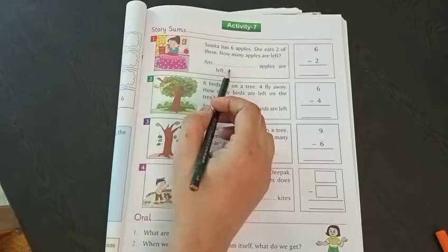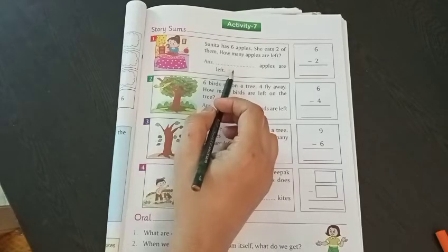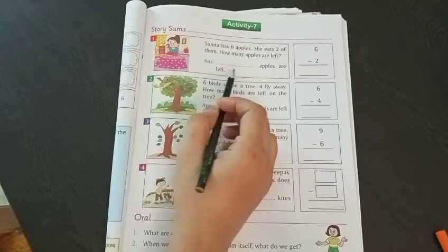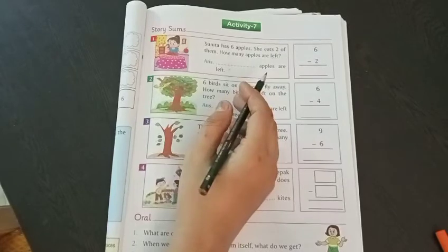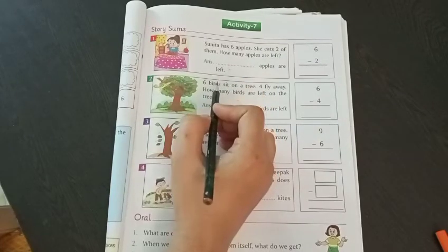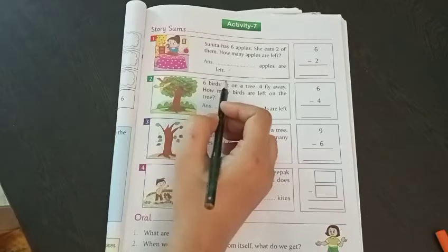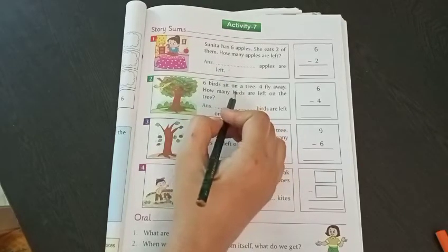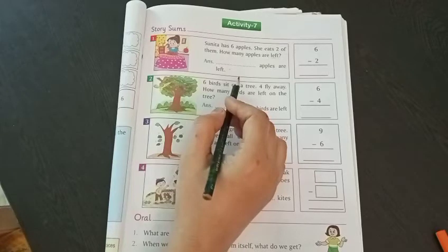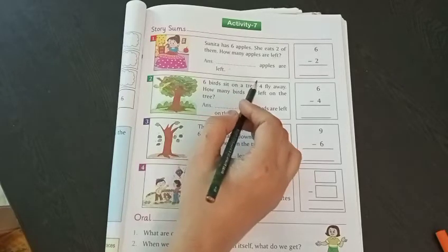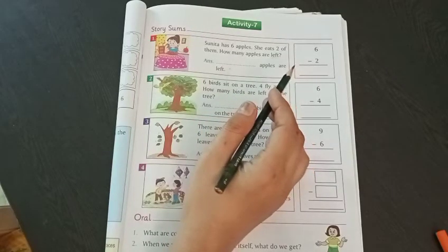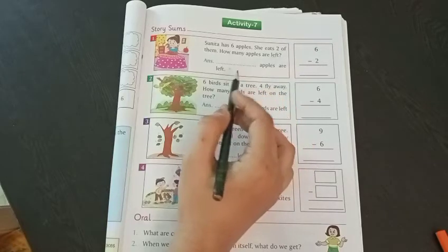I know most of you are facing problems while solving word problems, whether it is addition or subtraction, because you always look for the keywords and just add or subtract without understanding the problem. Some keywords for addition are total, in all, all together, and for subtraction: left, difference, minus.